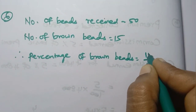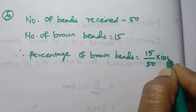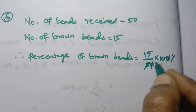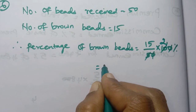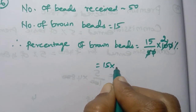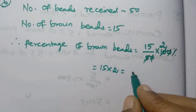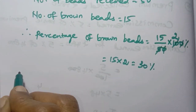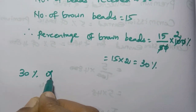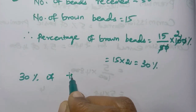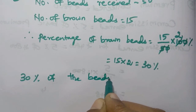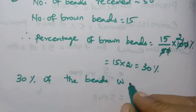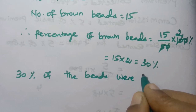Brown beads are 15 out of total 50, into 100%. Cancel zeros: 15 into 2 equals 30%. So 30% of the beads were brown.